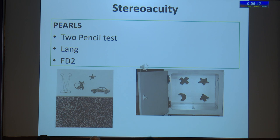Special tests such as stereo acuity can be done using the two-pencil test, Lang stereo acuity, or the Frisby-Davis distance test. All these tests are easy for a child to understand, comprehend, and respond to.